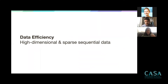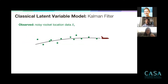Along the three axes of data efficiency, storage efficiency, and runtime, I'll first talk about data efficiency — focusing on high-dimensional sparse and sequential data. To provide more background on latent variable models, let me remind you of an important classical latent variable model: the Kalman filter. This is a fairly old model with origins in the 1960s, originally designed to denoise time series data and track the location of objects such as rockets.